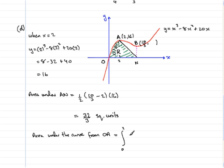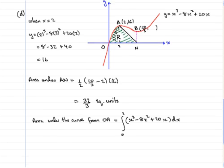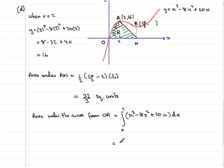The integral from 0 to 2 of the curve, and the curve is x cubed minus 8x squared plus 20x. Put that in brackets, integrate it with respect to x. If we integrate this, well we have integrated it, it was found in the earlier part, part c. We know that it's going to be x to the power of 4 over 4, minus 8x cubed over 3, and plus 10x squared. Put this in square brackets going between 0 and 2.